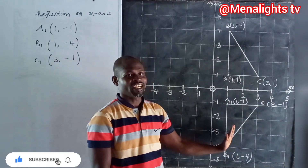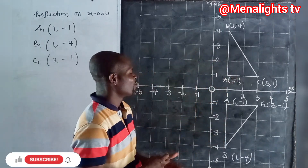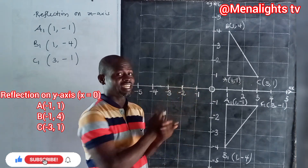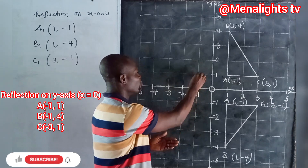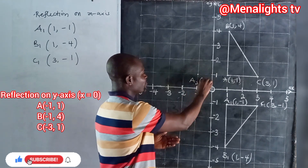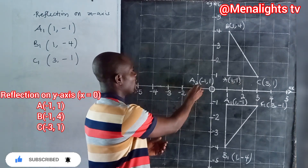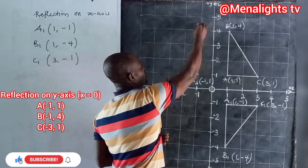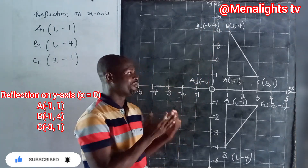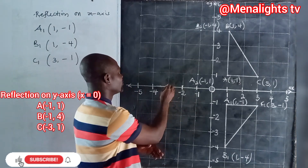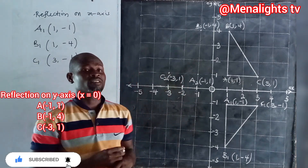Now we reflect the object on the y-axis. On the y-axis reflection, the x-coordinates become negative while y stays positive. So A at (1, 1) becomes A₂ at (-1, 1). B at (1, 4) becomes B₂ at (-1, 4). C at (3, 1) becomes C₂ at (-3, 1). We join these points to form the second reflected triangle.